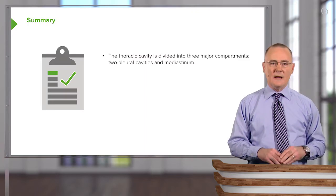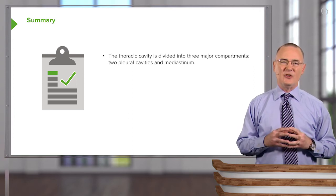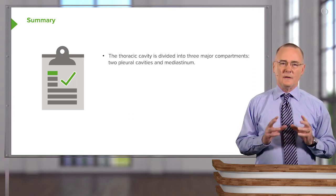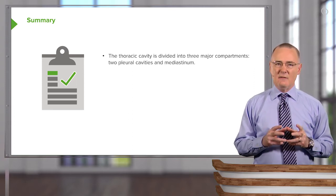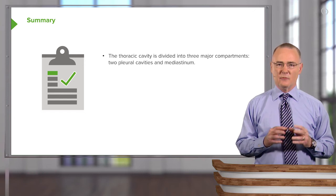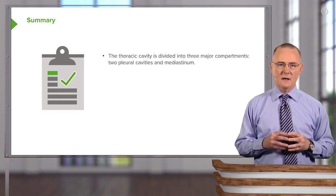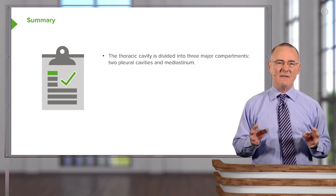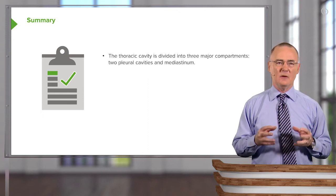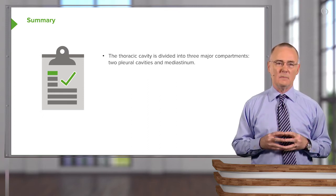Now let's summarize the key take-home messages. The thoracic cavity is divided into three major compartments: two pleural cavities and that area standing between them in the middle of the thoracic cavity called the mediastinum.